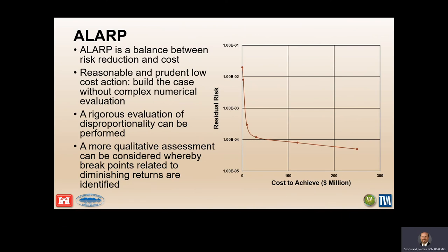ALARP is a challenge to describe. The Australians, the United States, and the UK have all struggled to define and use ALARP in decision-making. Ultimately, for the Corps and Reclamation, cost-effectiveness is the primary consideration — figuring out what reasonable and prudent actions can be taken to reduce risk, even when you're below the limit of tolerability. We've done very detailed studies where the Corps chose not to take action because risk had been reduced as low as reasonably practicable. Every part of the industry is still working to get a better handle on this.